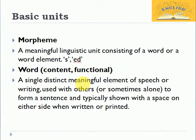Moving on, the next unit is word — a single meaningful element of speech or writing that is used with others to form sentences, but can also be used alone. Most of the time when you write words in English you use a space at both sides to make them distinct from another word.